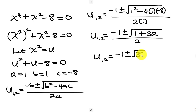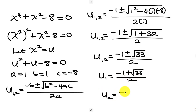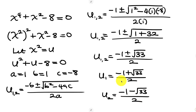So this becomes u equal to negative 1 plus or minus the square root of 33, all over 2. There are two values of u: one is negative 1 plus the square root of 33 all over 2, while the other is negative 1 minus the square root of 33 all over 2. Very good.